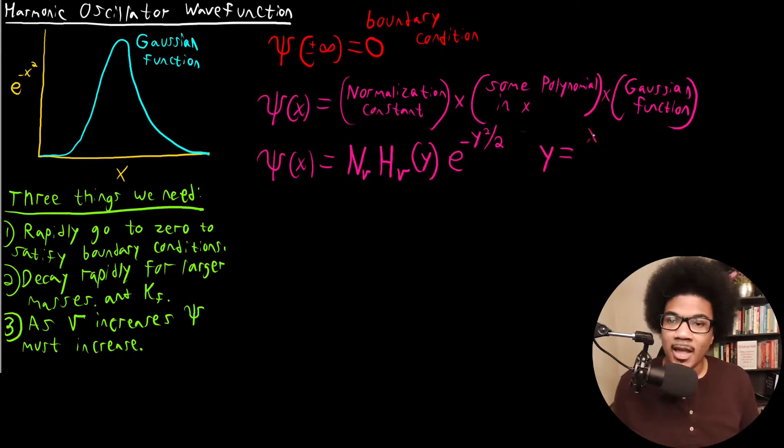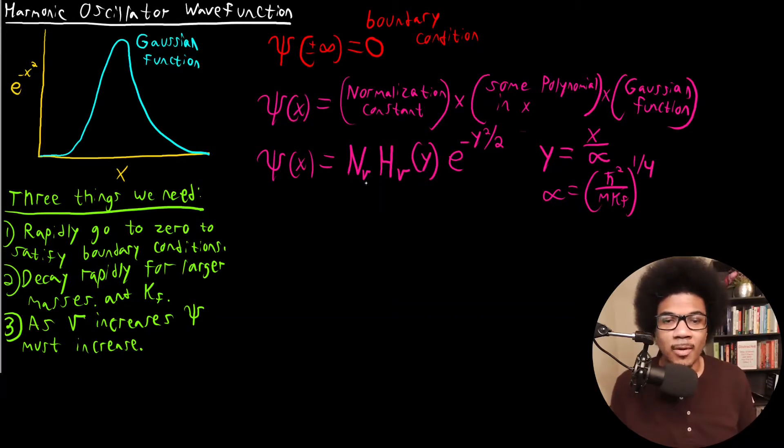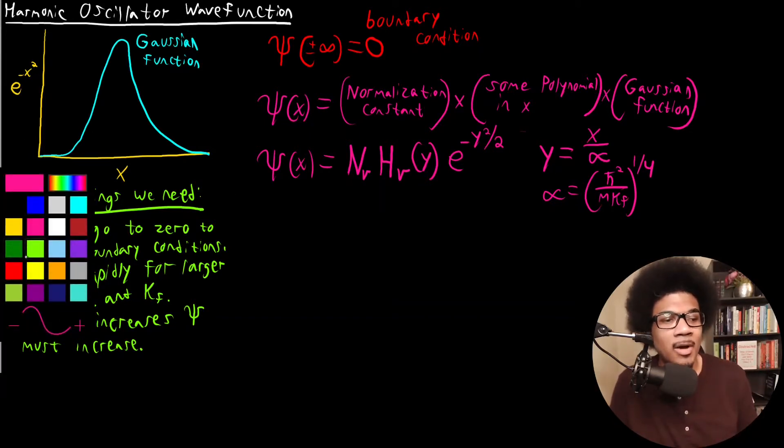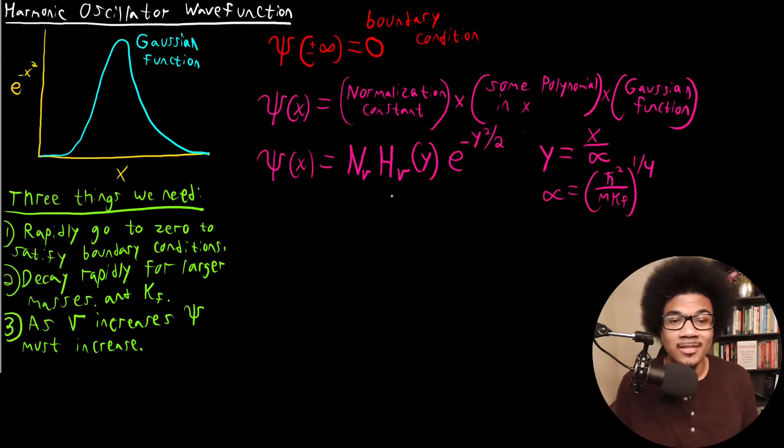Y is going to be X over alpha, where alpha is H-bar squared over M times KF to the one-fourth power. Now, mostly don't get lost in these details right now, just yet. Once I explain the Hermite polynomials more fully, it'll make more sense.